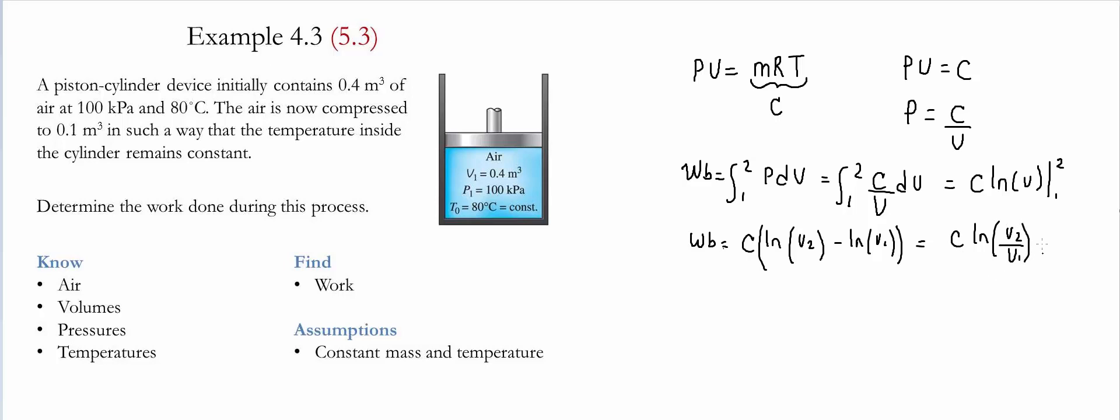For us to be able to substitute into this equation, we need to first find the value of c. c is defined as the multiplication of pressure and volume at any of the stages. So c could simply be p1 v1, or p2 v2. In this problem, we have the initial pressure and the initial volume.